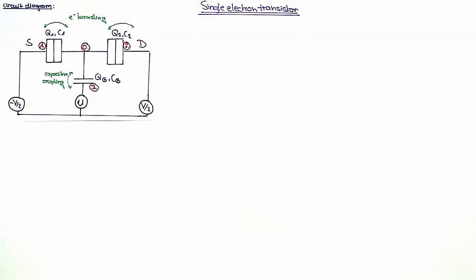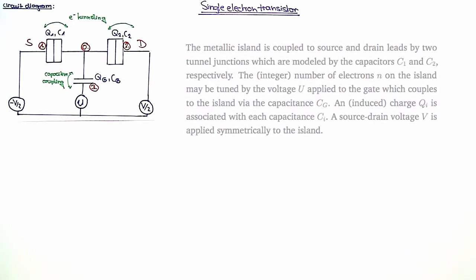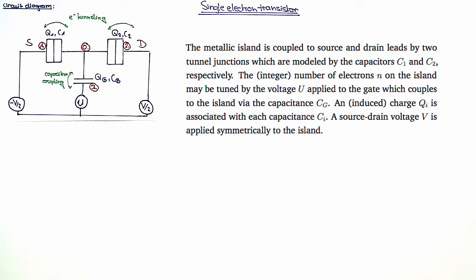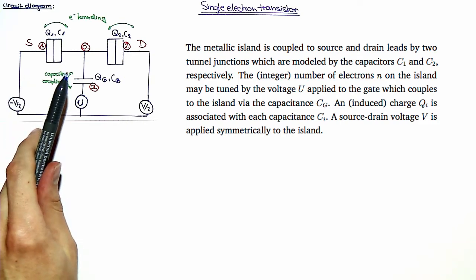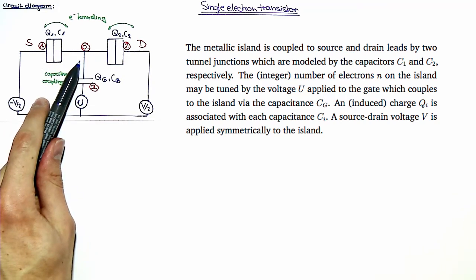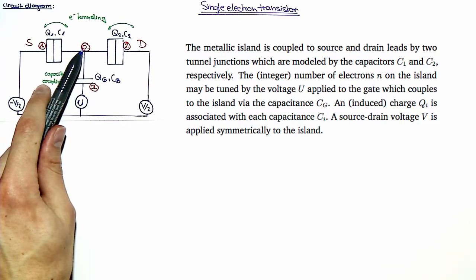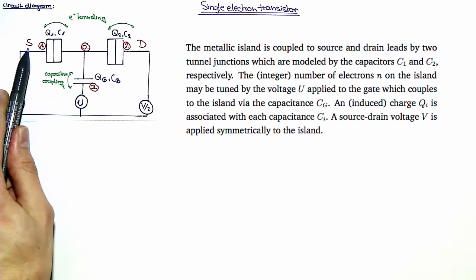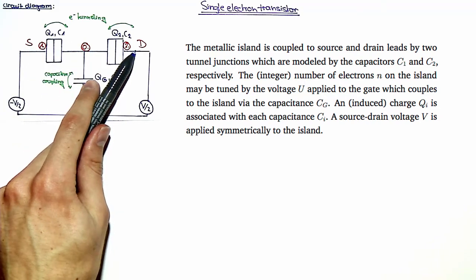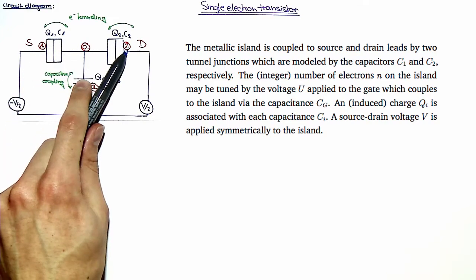Welcome to the video solution: single electron transistor. In this exercise we are going to consider a single electron transistor described schematically as shown here. A metallic island where electrons are confined, labeled as zero, is tunnel coupled to electron reservoirs called source and drain, labeled as one and two.